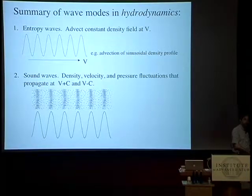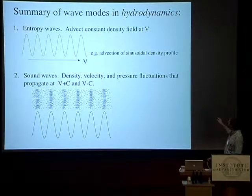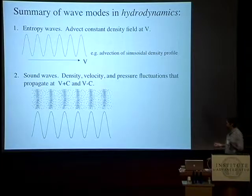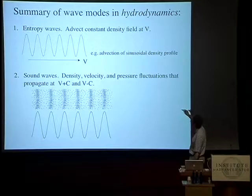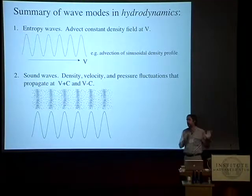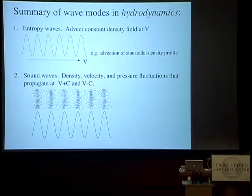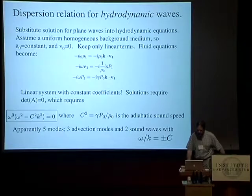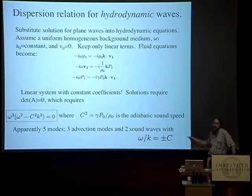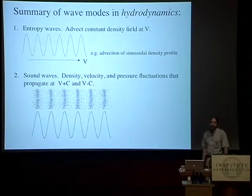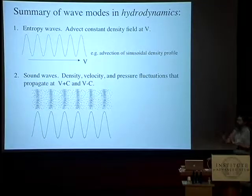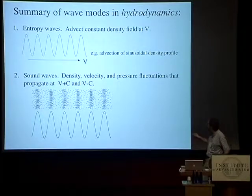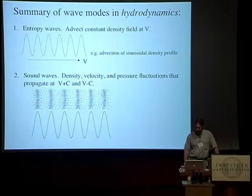So the basic wave solutions of hydrodynamics are entropy waves — advecting density or transverse momentum with the flow without changing shape — and sound waves, which are true propagating disturbances where density, velocity, and pressure all fluctuate. Sound waves propagate in two directions at V+C and V−C, representing compressions and rarefactions at the sound speed superimposed on the background flow V. Here's a movie of a sound wave test in Athena, propagating at a oblique angle to the grid in a periodic domain — it just propagates indefinitely as a linear wave.